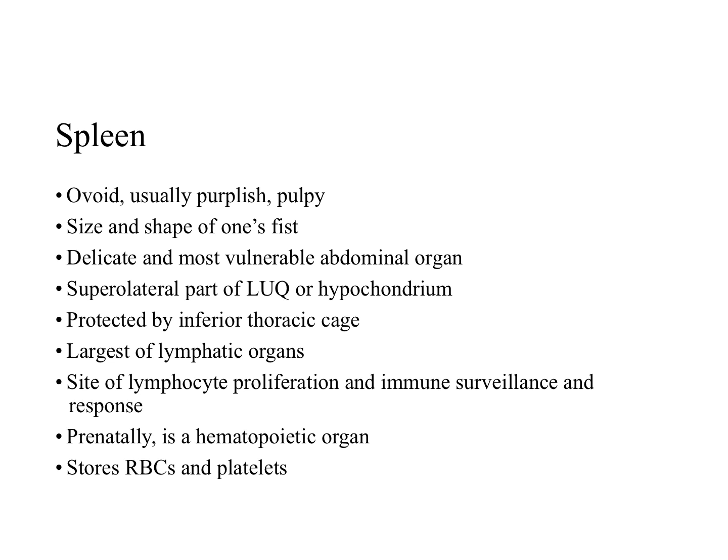Now we'll look at the accessory organs of the GI tract, starting with the spleen. The spleen is ovoid, usually purple and pulpy, about the size and shape of one's fist. It's relatively delicate and considered the most vulnerable of the abdominal organs. The spleen is located in the superolateral part of the left upper quadrant, in the left hypochondrium region of the abdomen, where it has protection from the inferior thoracic cage.